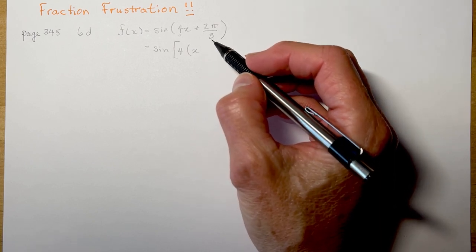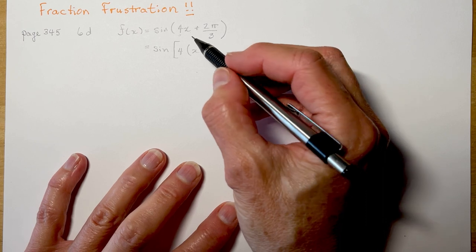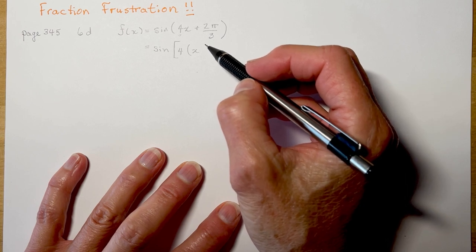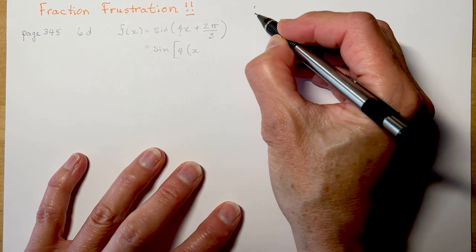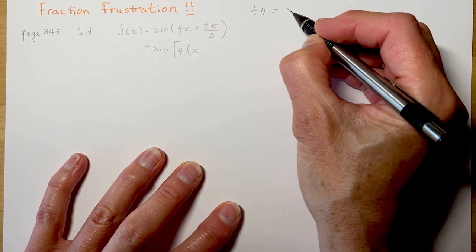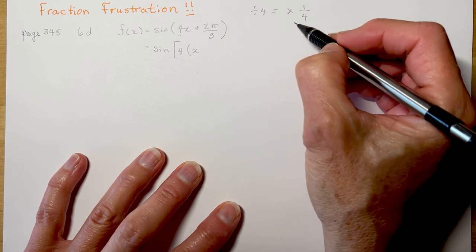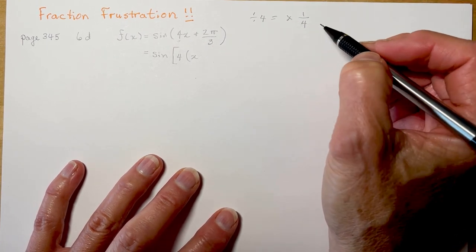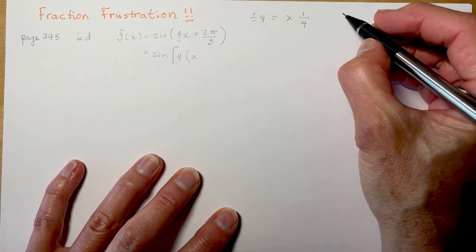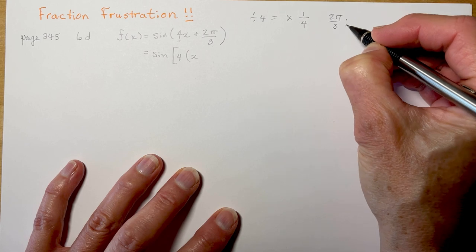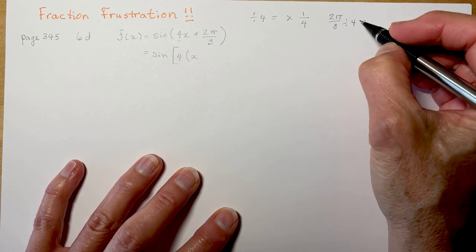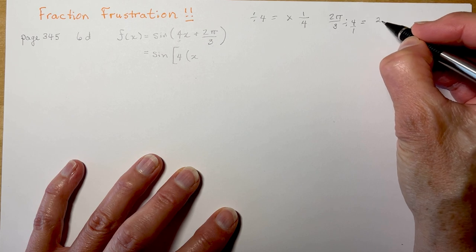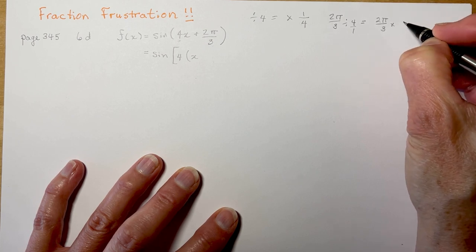It's a fraction, and people sometimes just freak out. So let's say I'm going to divide this by 4. If you're not really confident with it, think of it this way: dividing by 4 is the same thing as multiplying by 1/4. So if I'm dividing by 4, I'm putting the 4 into the denominator. Dividing by 4 or multiplying by one quarter is the same operation. So I have 2π/3 and I want to divide by 4. Any number can be written as a fraction — 4 over 1 is still 4. When you divide, you invert and multiply, which is why I'm multiplying by 1/4.